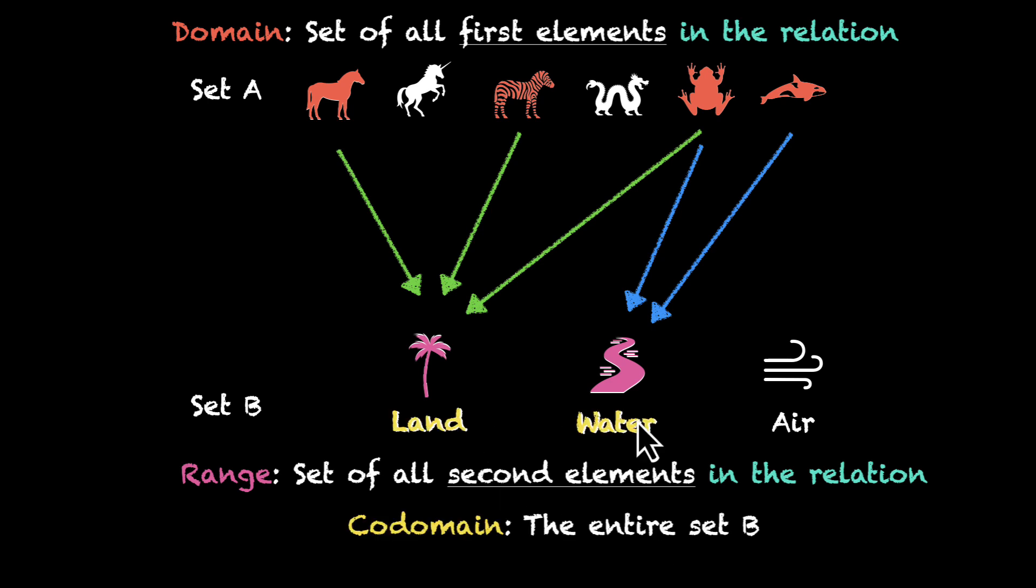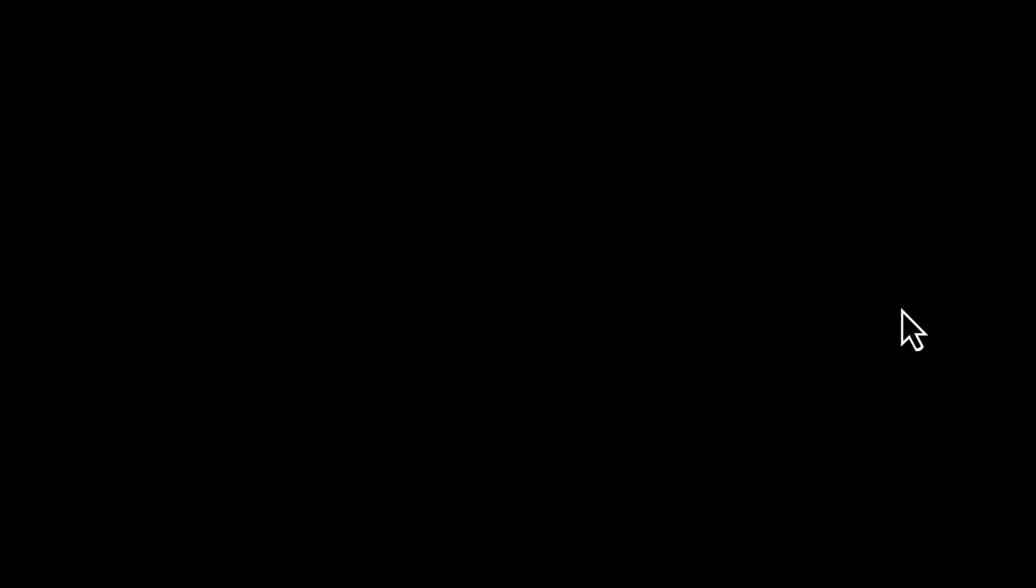Co-domain is the entire set B. That's going to be land, water, and air, all three of them. Okay, so let's jump to our problem. This is the problem. This is the relation.